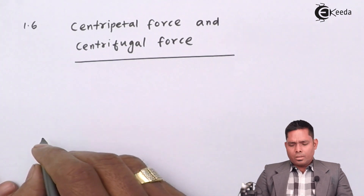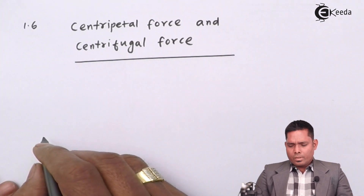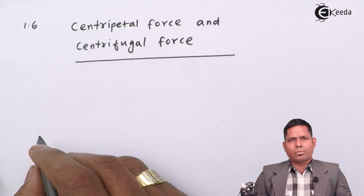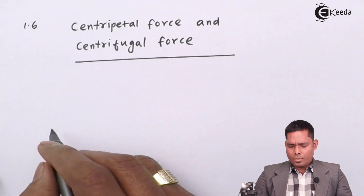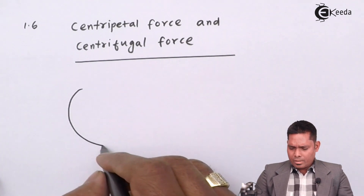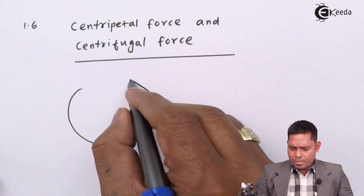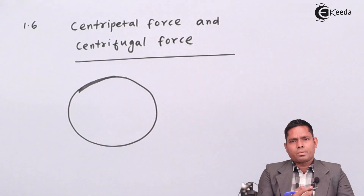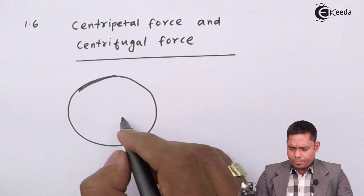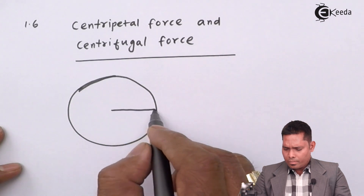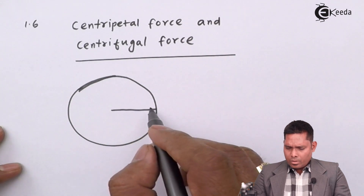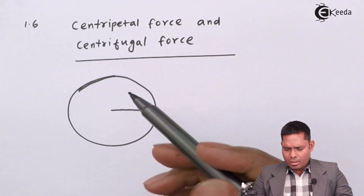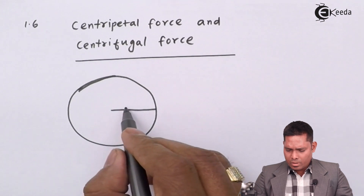As we have discussed, we have discussed about centripetal acceleration. When a body is moving along the circumference of a circle, the centripetal acceleration is towards the center.